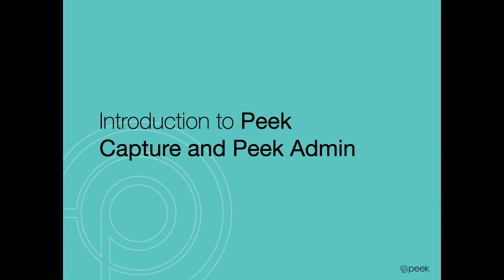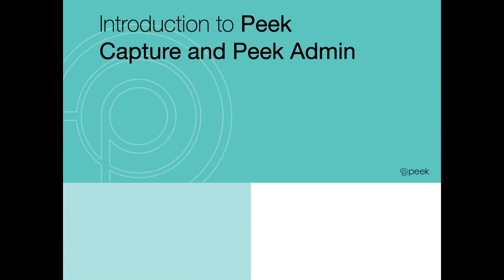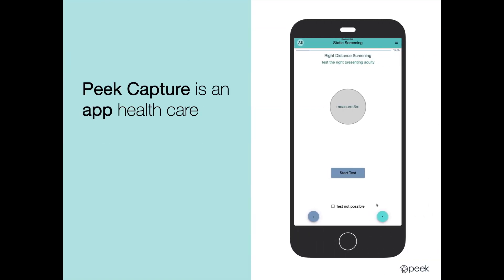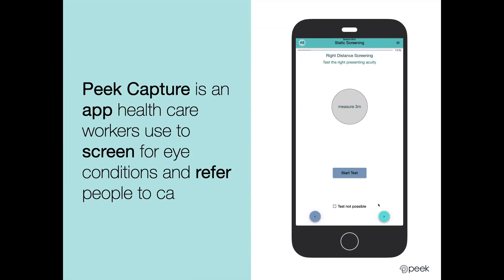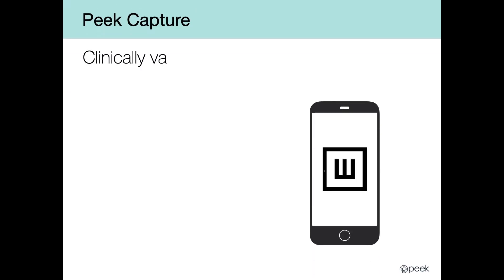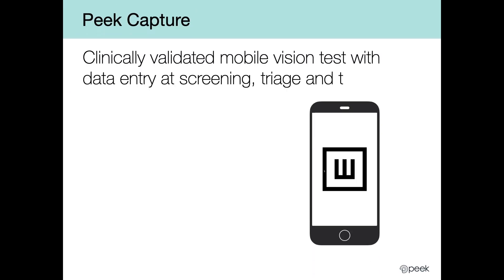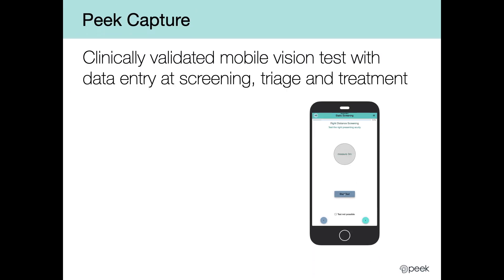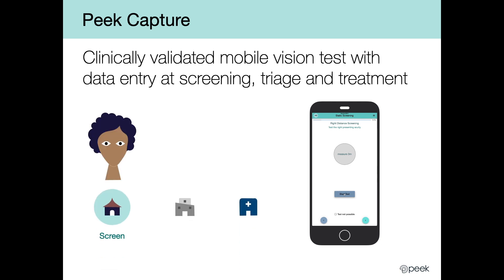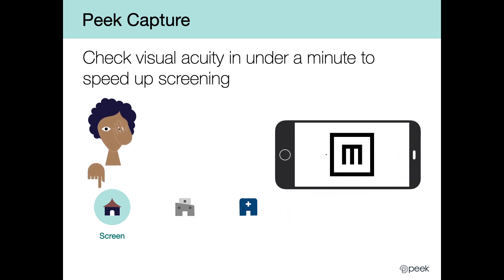There are two key components to the PIC software: PIC Capture and PIC Admin. PIC Capture is an app used by healthcare workers to screen for eye conditions and refer people to care. The app features a clinically validated mobile vision test with data entry at screening, triage, and treatment points. The mobile vision test allows you to check visual acuity in under one minute to speed up screening.